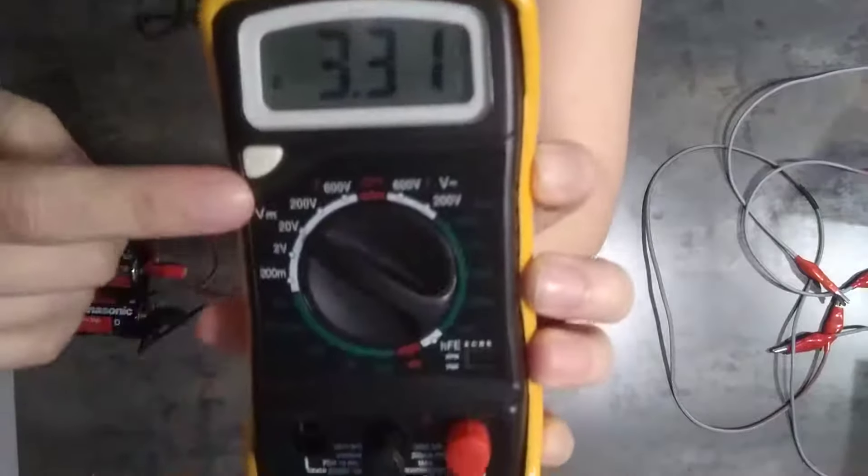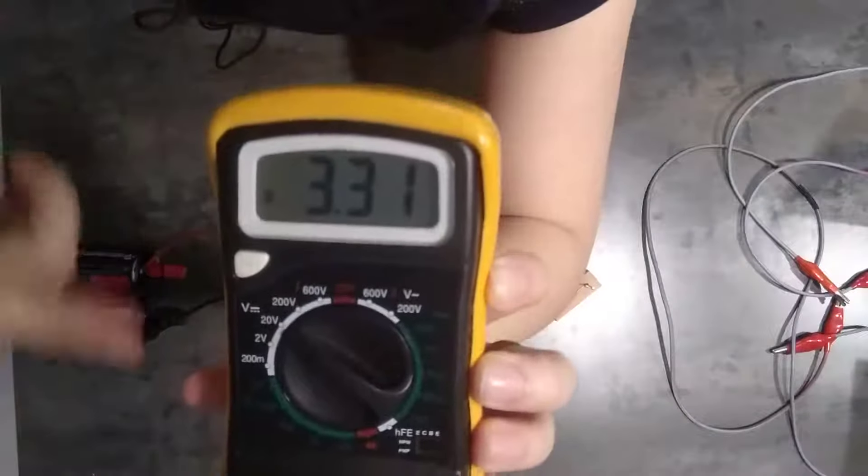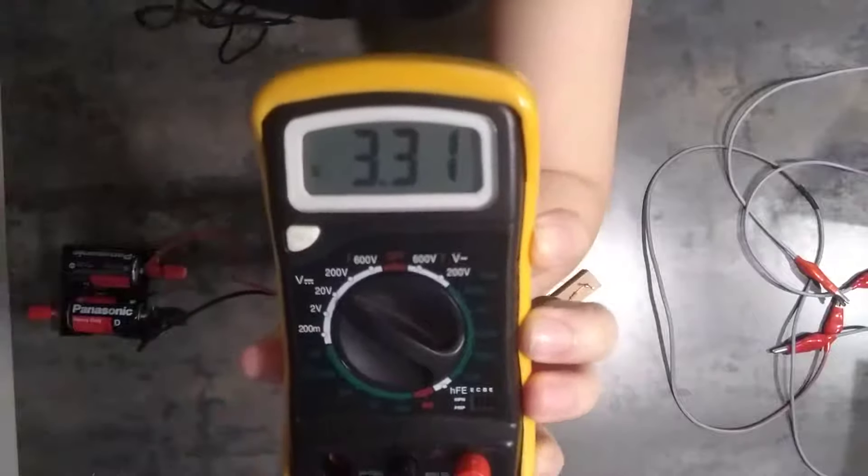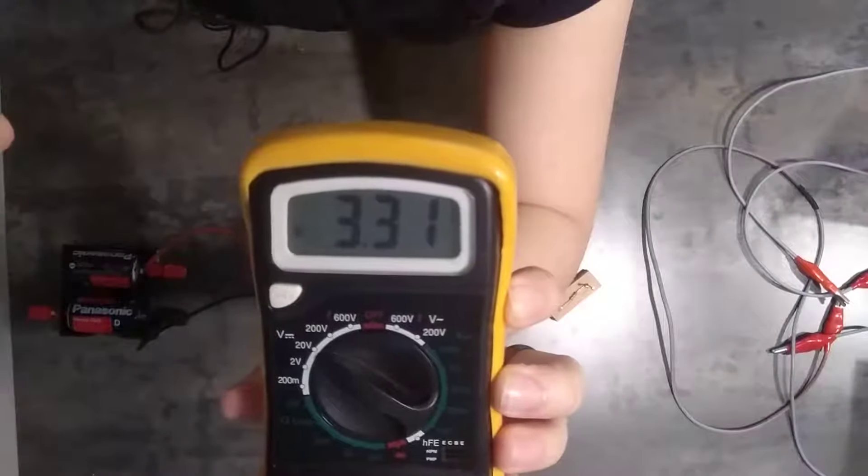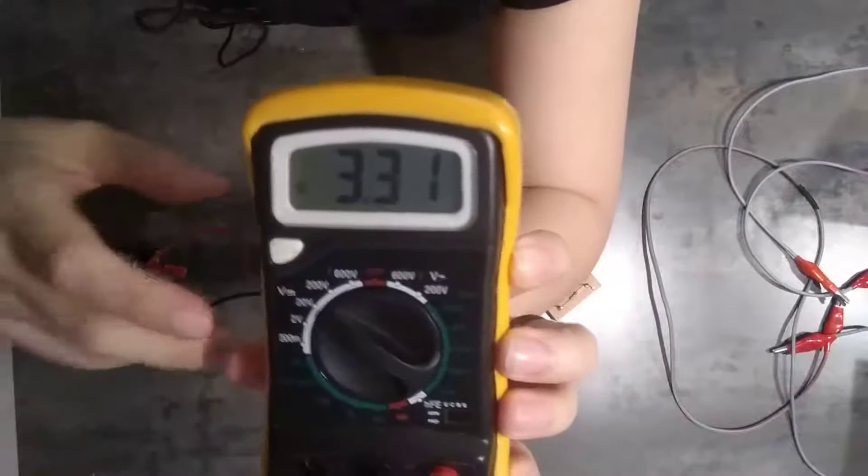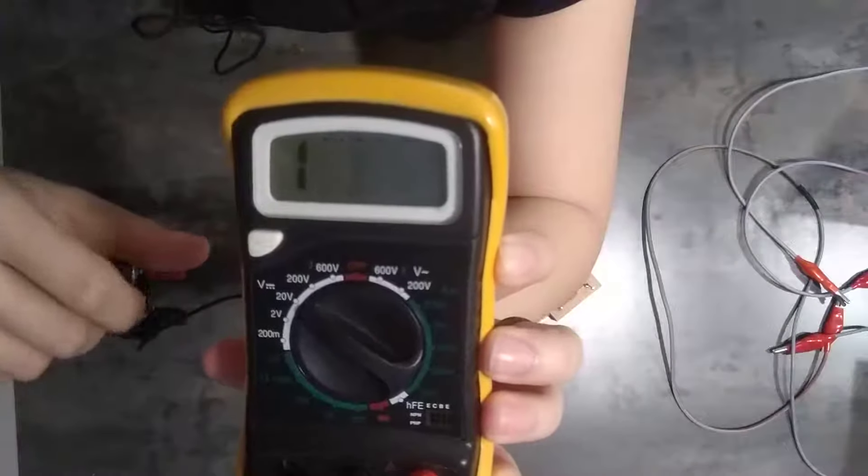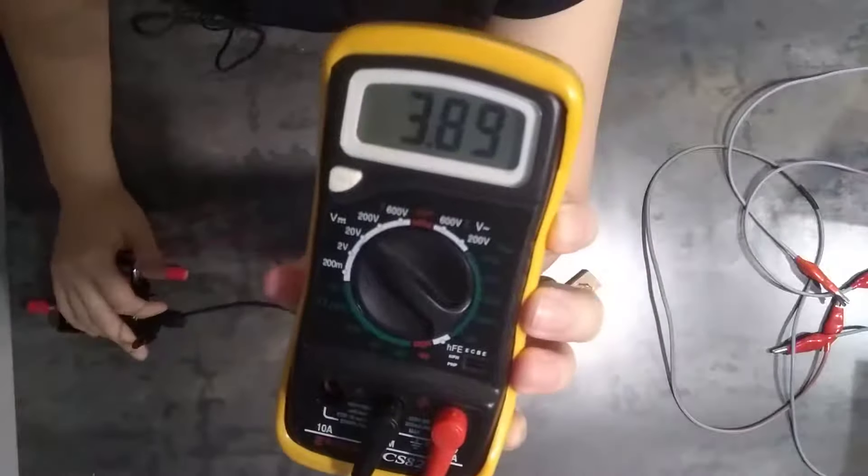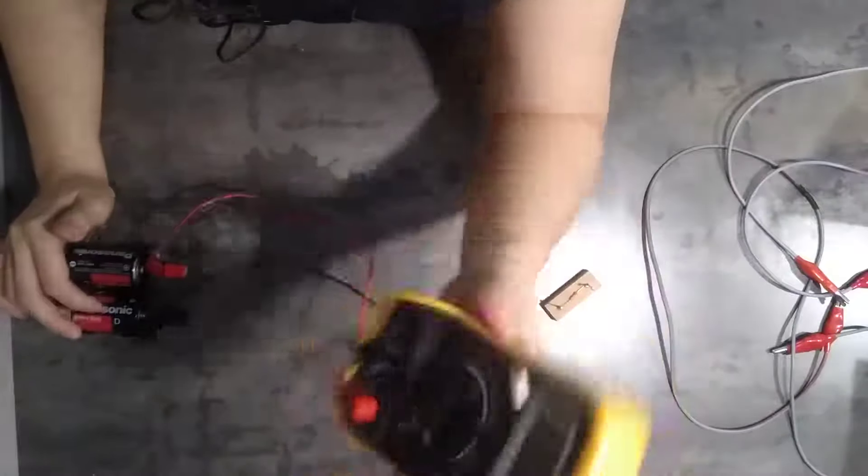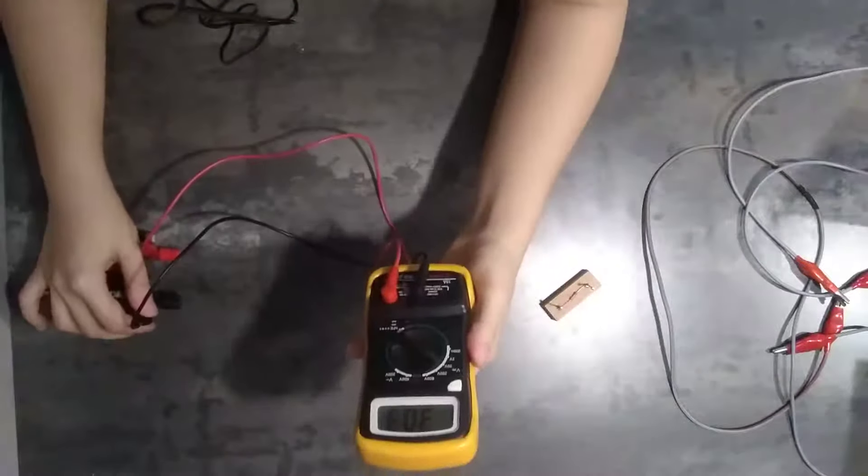Now if you don't unhold this and you continue to take your reading, your reading will forever be 3.31. Then all your experiment fail already. So make sure you unhold it or unfreeze it so that you can get a proper reading when necessary.